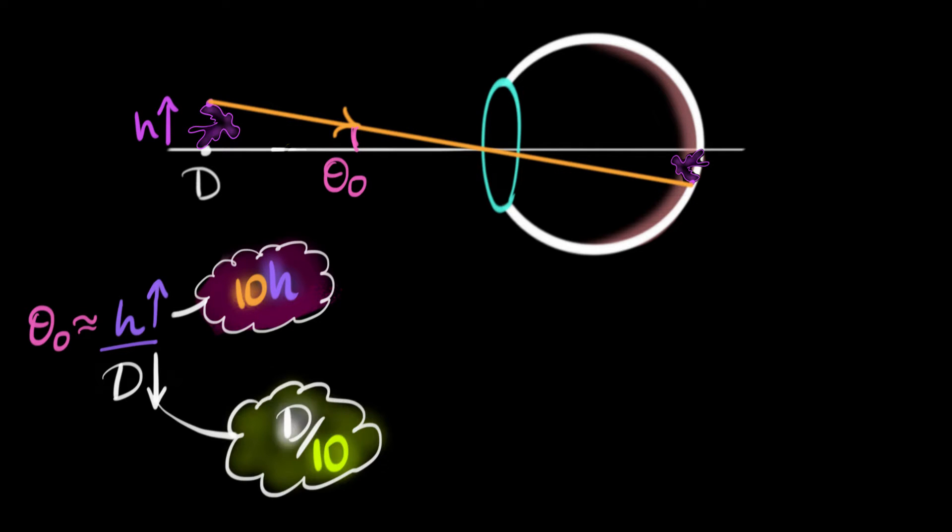Suppose we could go about 10 times closer, say, than the near point. Of course, with our naked eye, it's going to be absolutely blurred, but somehow if we solve that problem of blurring, and if we could go 10 times closer, then again, theta naught will increase again by a factor of 10, which means there'll be a total increase of a factor of 100. Can you see that? 100 times more, this size will be in our retina now. And guess what? That's exactly what a compound microscope does.